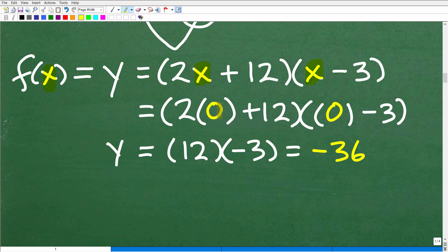So two times zero is right here, zero. So that'll be two times zero, zero plus 12. So this would be 12, and then zero minus three. So zero minus three is negative three. So 12 times negative three is negative 36. Super easy. That is negative 36 is the y-intercept.